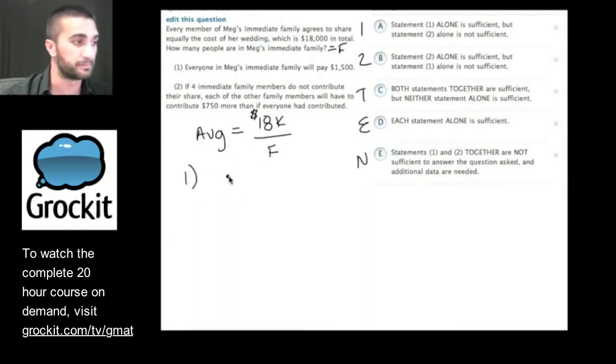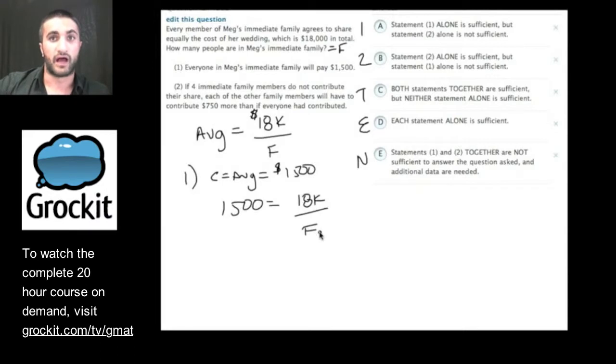Let's take a look at statement number one. Everyone in Meg's immediate family will pay $1,500. So their contribution or their average that they pay each will be $1,500. So that would give me an equation like this: $1,500 equals $18,000 over F. Now, I can solve for F. Do I need to? I don't think so.